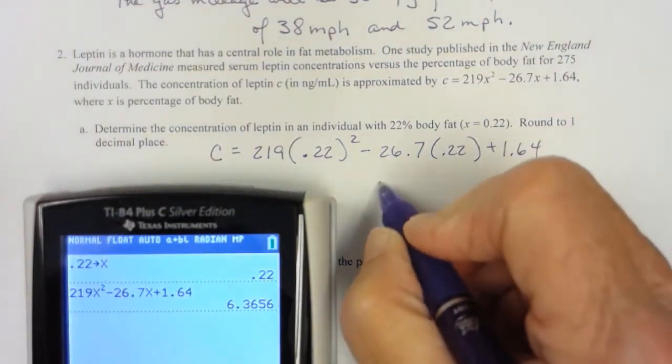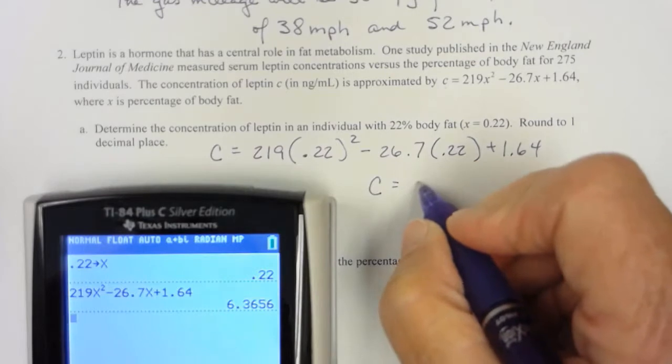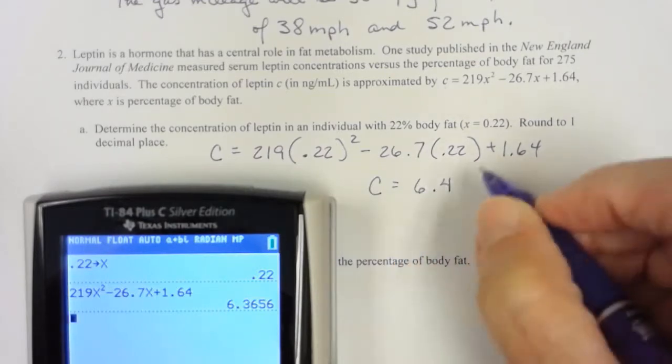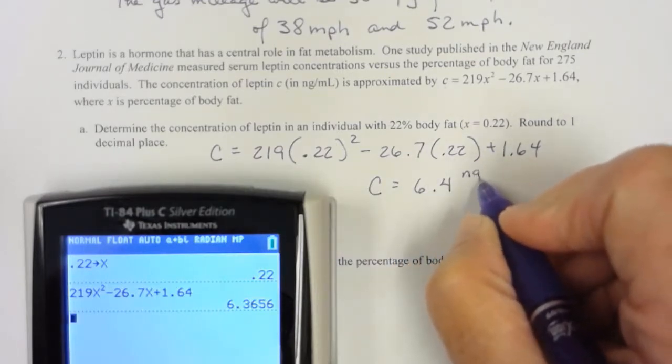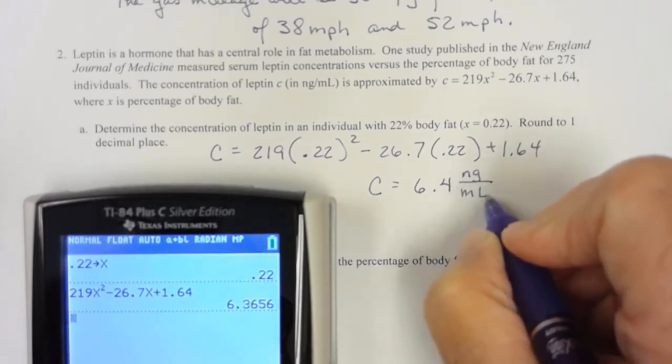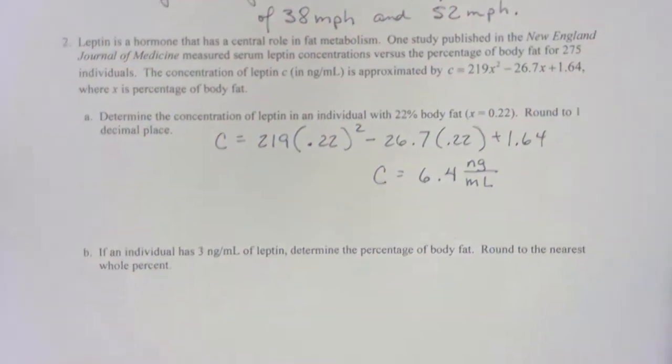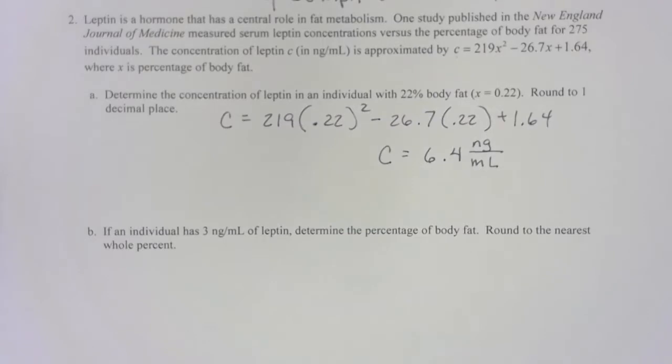So 6.36, they say to round to one decimal place. So that would be my concentration here would be 6.4, and that's whatever NG is over milliliters. So that wasn't too bad. Let's see what the next one is.